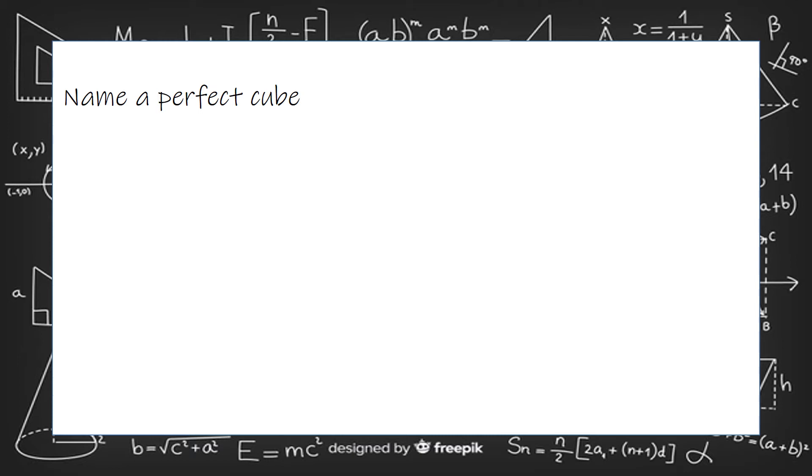Name a perfect cube. So a perfect cube is something that is a number times itself three times. So one times one times one would be one. Two times two times two, two times two is four times two is eight.